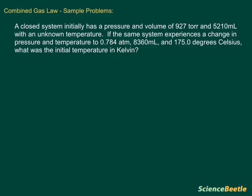Hey, welcome back. We're going to look at a combined gas law sample problem. We've got one right here, so let's go ahead and read this. We have a closed system initially with a pressure and volume of 927 torr and 5210 mL with an unknown temperature.